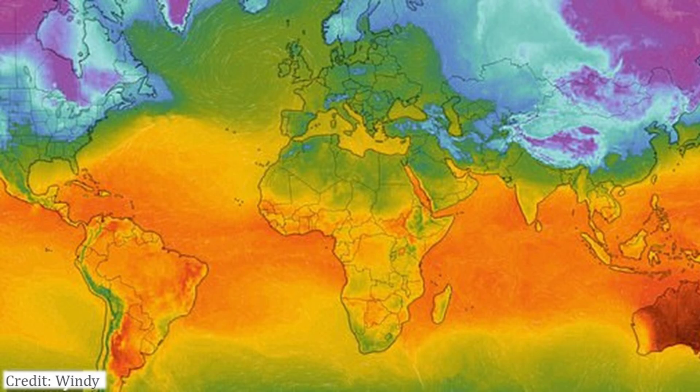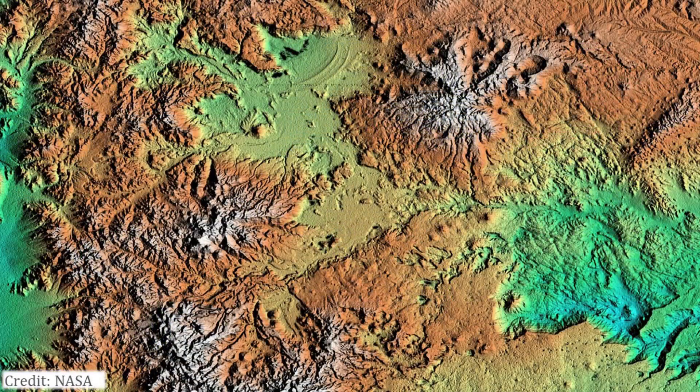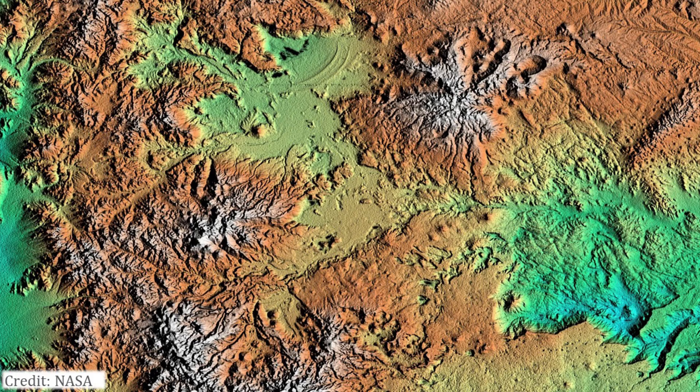The temperature map of the world is an everyday example of a scalar field. Another classic example would be the altitude or height of a terrain.